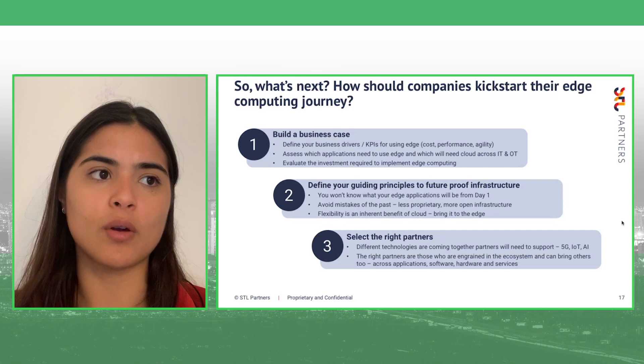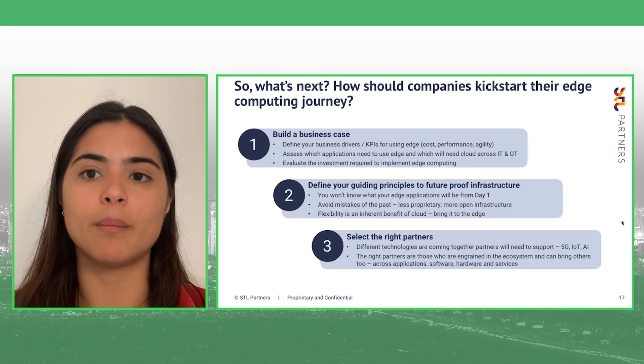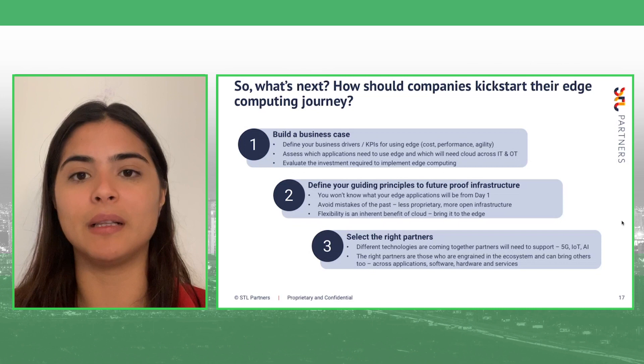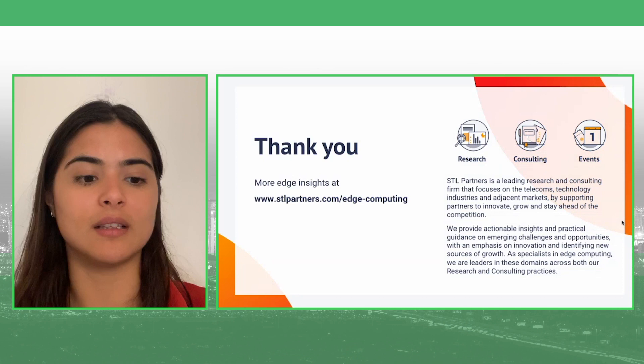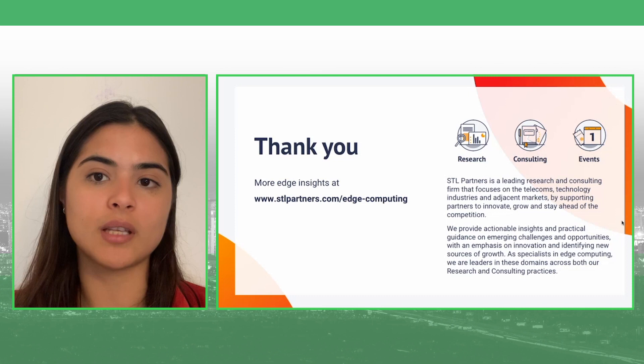The last recommendation is selecting the right partners. With many technologies converging — edge, 5G, IoT, AI and ML, AR and VR — you need partners who understand these technologies and can integrate them into their solutions today or in the future. Many companies are now taking a role in bringing the ecosystem together across software, hardware, and services, and that's critical. That's it for today — thanks everyone for listening. Happy to take any questions offline.